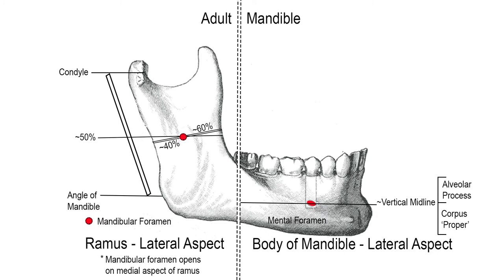For the mandibular foramen, the local anesthesia insertion point may no longer be considered directly in relation to the occlusal plane. Extraorally, the mid-distance between the palpable condyle and the mandibular angle may be used as a vertical reference point, while intraorally, the coronoid notch — that is, the greatest concavity on the anterior border of the ramus — may be used as a horizontal reference point.